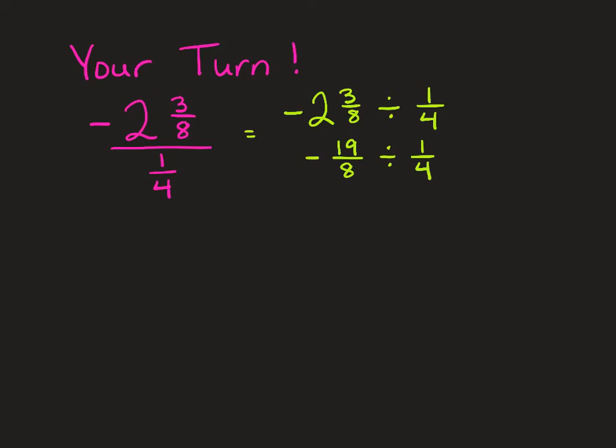And now I can use the same opposite switch. Keep negative 19 eighths the same. Divide goes to the opposite, multiply. And switch 1 fourth to 4 over 1. I can multiply my numerators, negative 19 times 4, and then multiply my denominators, 8 times 1. Negative 19 times 4 is negative 76. And 8 times 1 is 8.